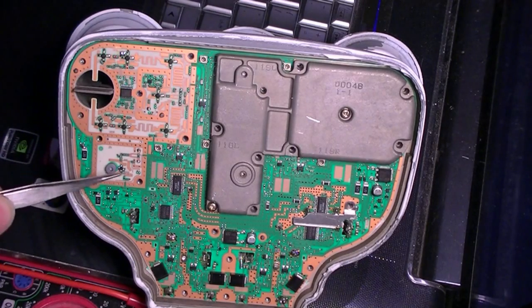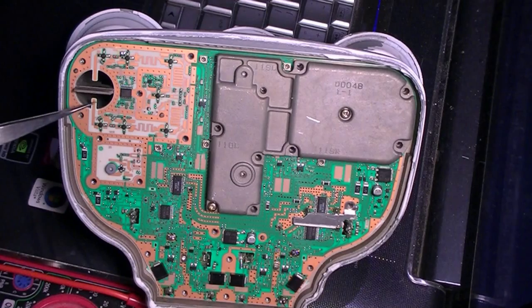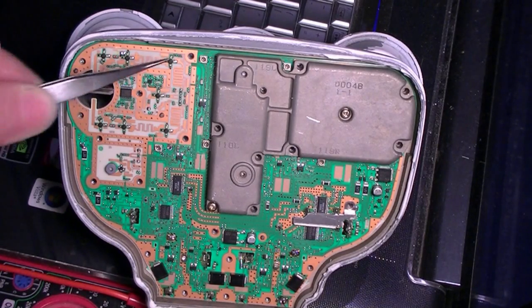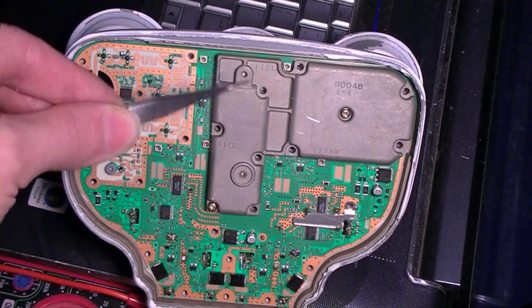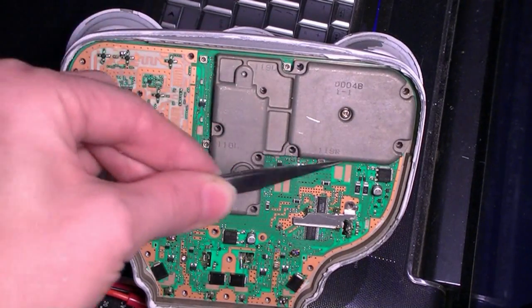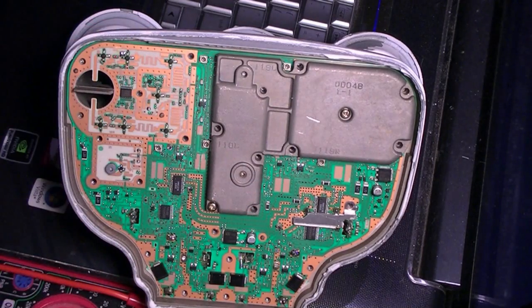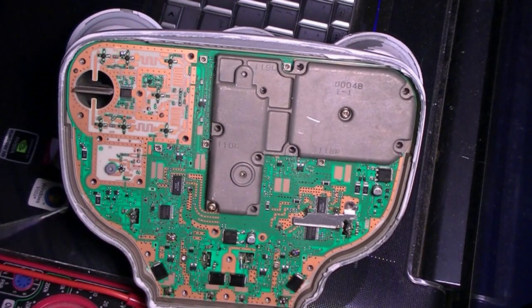This is what it looks like inside. This one has three feed horns and two local oscillators. I removed the cover off of one of the feed horn sections, exposing the two antennas for the left and right polarization, and the DRO oscillator.